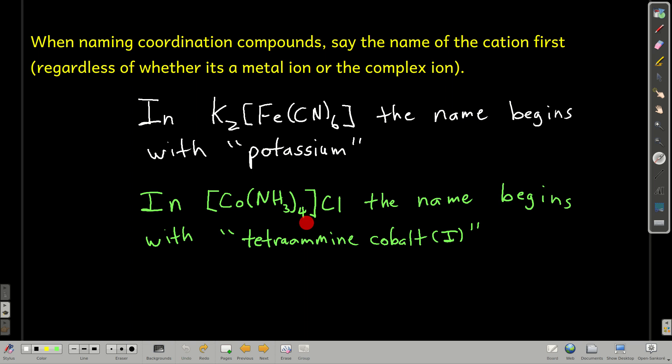Here, because the complex ion is written first, we know it's the cation, so we would say its name first. The name of this complex ion is tetramine cobalt(I). So that's how the name of this compound would start out.